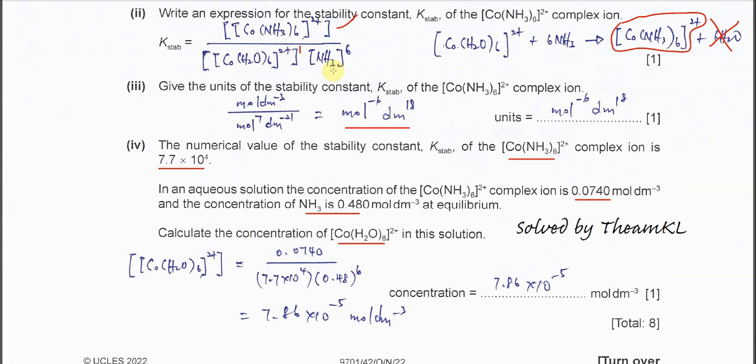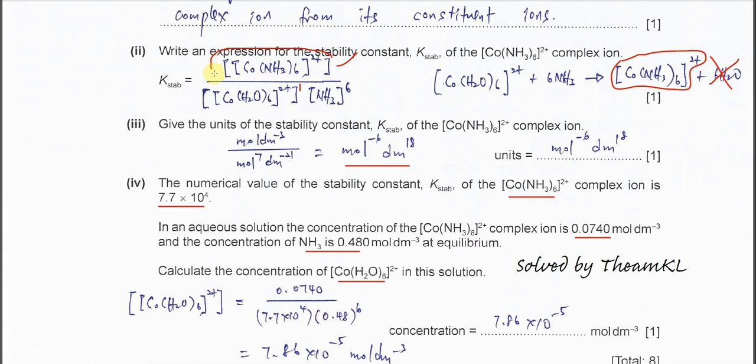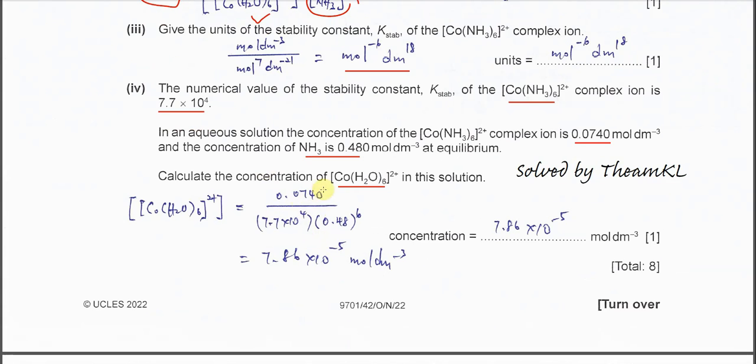This one is quite easy. Just substitute all the given values into this expression and rearrange. This one is 0.074, this one is 0.48. K stability is already given. Rearrange and substitute all the values, so you get 7.86 times 10 to the power of negative 5 mole per dm cubed. That's all, thank you.